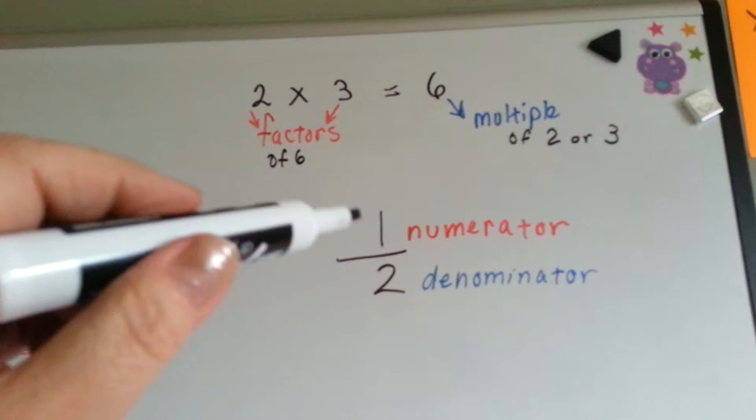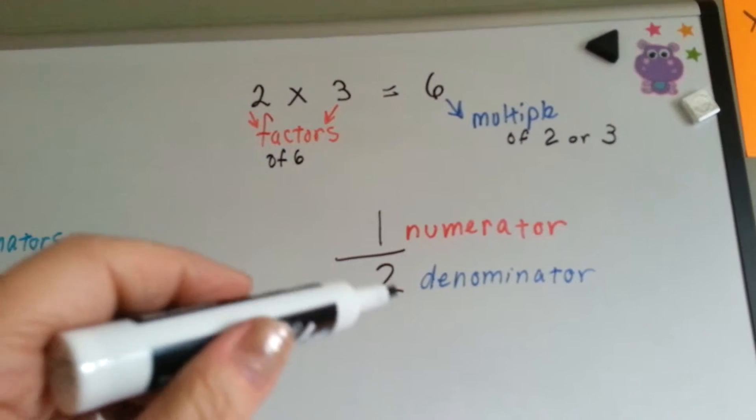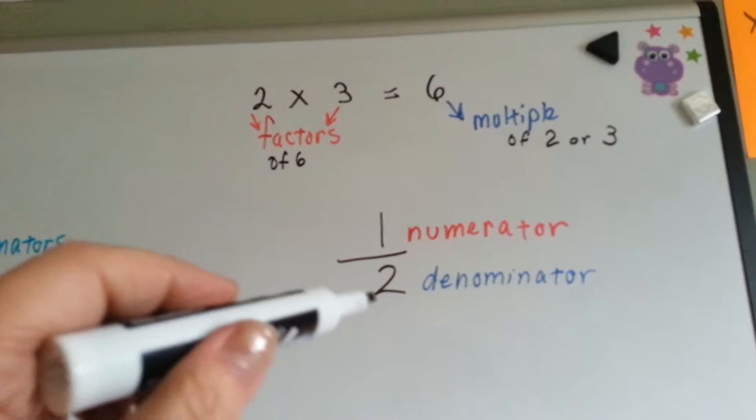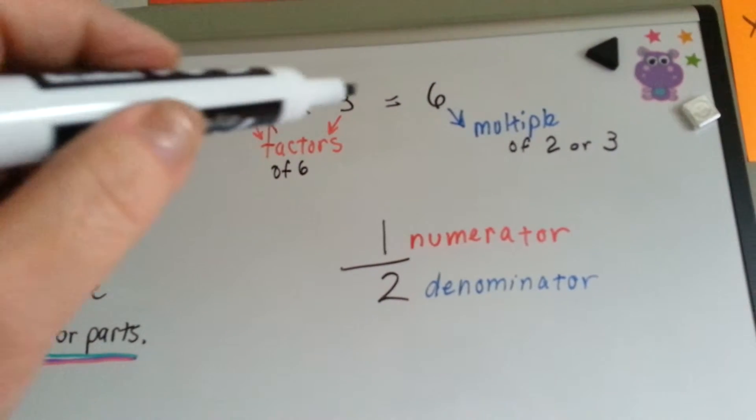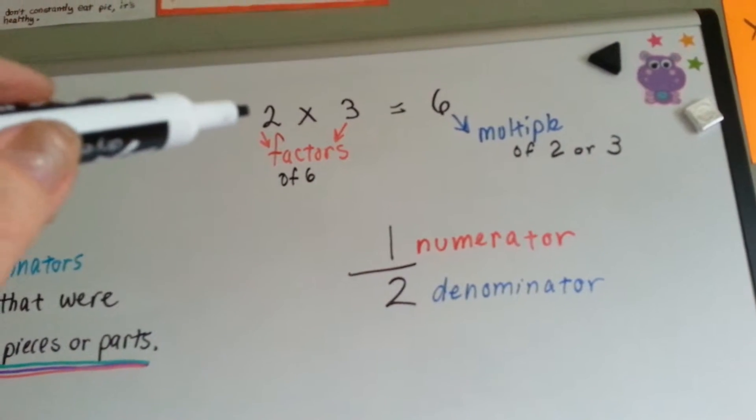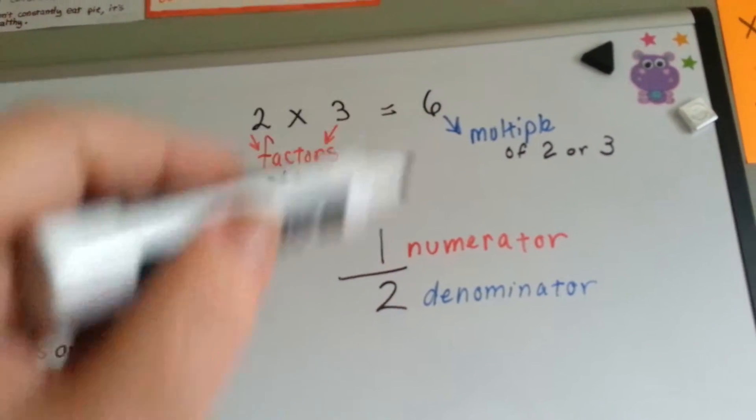This is how many pieces you have of how many pieces it was cut into. A pie was cut into two parts and you've got one of the parts. In a multiplication problem equation, these are the factors and that's the multiple, the 6.